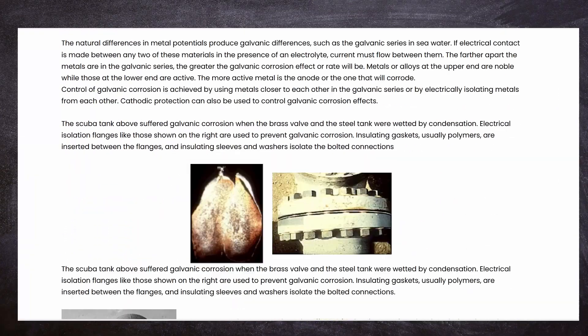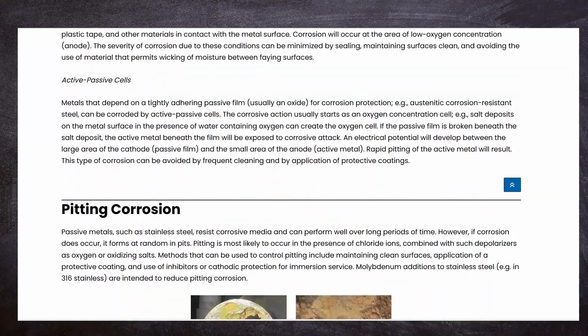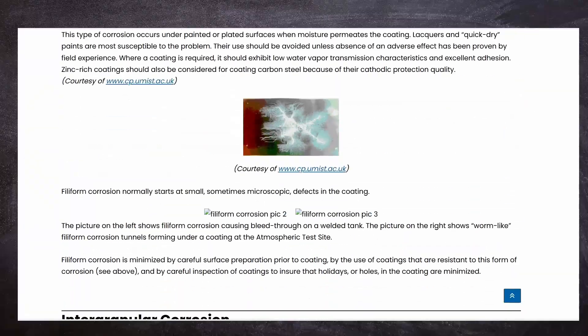Corrosion failure can occur through several mechanisms, such as uniform corrosion, pitting corrosion, crevice corrosion, and galvanic corrosion.